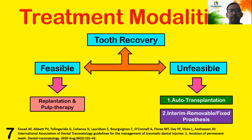There are various treatment modalities. If tooth recovery is feasible, we have the replantation option — replantation can be done followed by pulp therapy, or pulp therapy first followed by replantation. If tooth recovery is not feasible, we have the option of auto-transplantation. The next option is interim removable or fixed prostheses for the missing tooth.